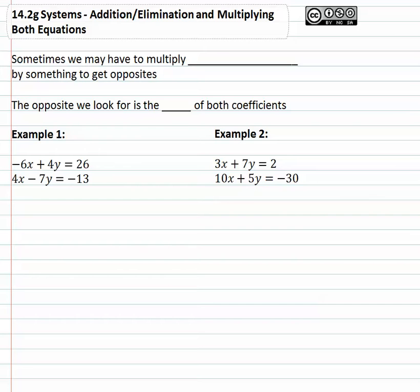However, sometimes we have to do some work to get opposites by multiplying one of the equations by something. And even other times, we may have to multiply both equations by something to get opposites. If we're multiplying both equations, the opposite we look for is usually the least common multiple of both coefficients.